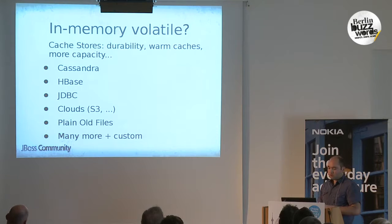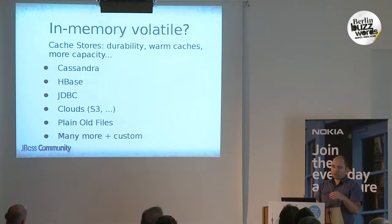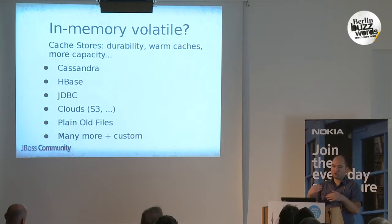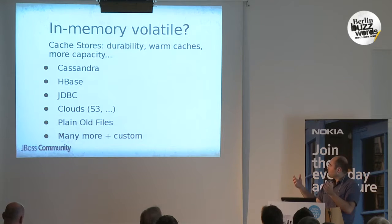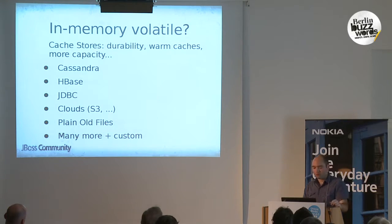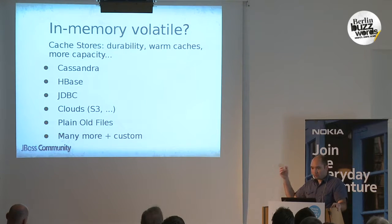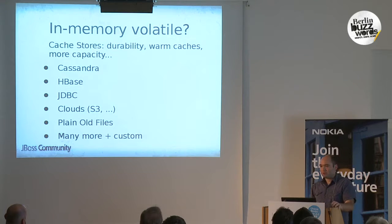Of course you might not want to keep all your precious data in memory, and that's where cache stores come in. InfiniSpan can offload writes happening in the grid directly to a cache loader — just an SPI integration point. There exist many possible alternatives already: a Cassandra one which is very nice for heavy writes, an HBase implementation, JDBC, cloud stores, and many more. Cache stores can be configured to write asynchronously, so you can still have high performance from in-memory writes while keeping high availability by replicating across multiple nodes.